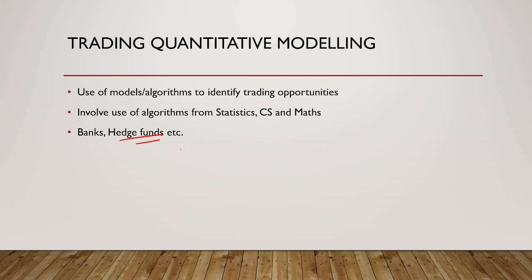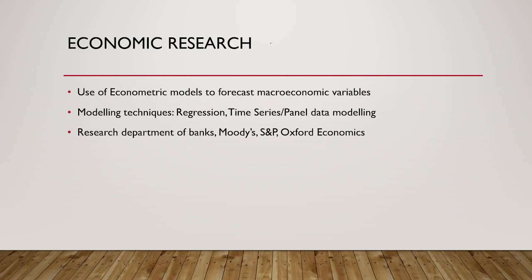These roles typically attract people with a PhD in statistics, mathematics, computer science, physics, or engineering. Then you have the economic research department — if you are an economist or statistician familiar with macroeconomic analysis, this department is involved in forecasting macroeconomic variables. These reports are used for stress testing, IFRS 9 expected loss forecasting, and other purposes. It involves heavy use of econometric models — regression, time series, and panel modeling. Besides banks, you can also work for research agencies and consulting firms such as Moody's, S&P, Oxford Economics, or the Big Four consulting firms.